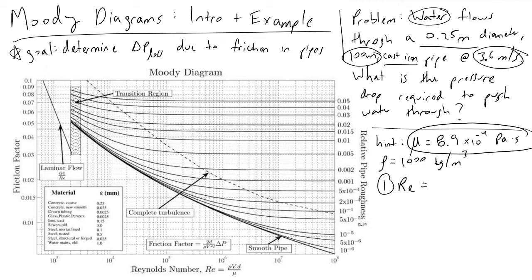Step one is to calculate Reynolds number, which we hopefully know is rho VD over mu. In other words, the density of our fluid times the velocity of our fluid times the diameter of the pipe we're interested in divided by the dynamic viscosity. If you plug in these values, what you'll find is that we arrive at a Reynolds number of approximately one times 10 to the sixth.